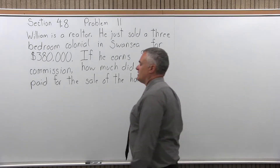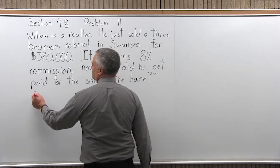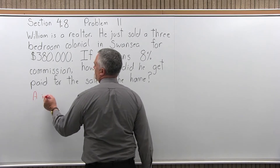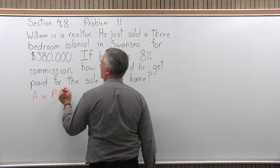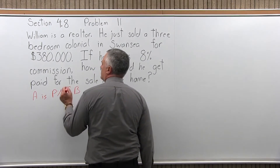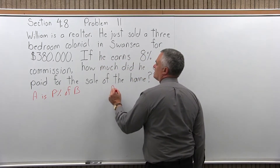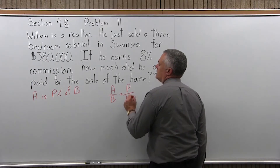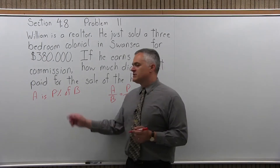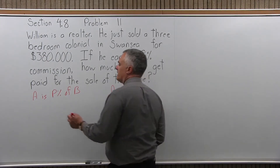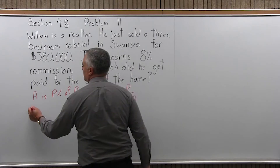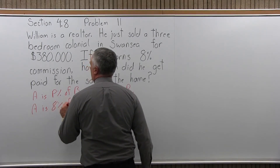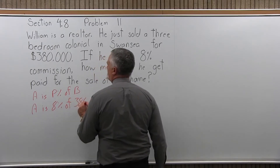So, what this amounts to — because it's a percent problem, I want to be able to write it as A is P percent of B. Fill it into that form and then use the formula A over B equals P over 100. So to put it in the A is P percent of B form, what I want to know is A